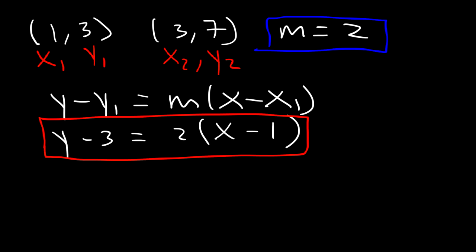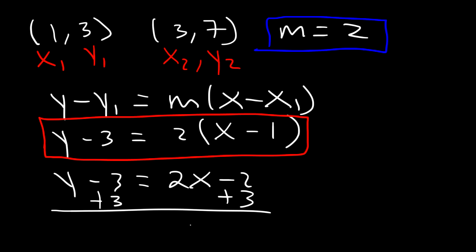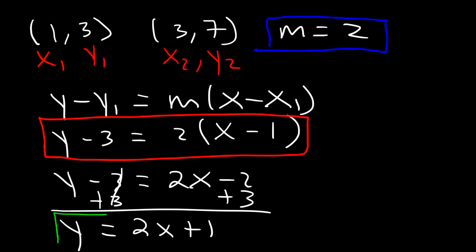If you want the answer in slope-intercept form, you need to get y by itself. First, distribute the 2 to (x - 1), giving 2x - 2. Next, add 3 to both sides. Negative 2 plus 3 is 1. So y = 2x + 1. This is the answer in slope-intercept form.